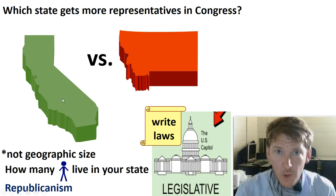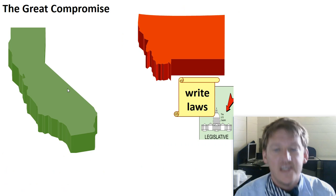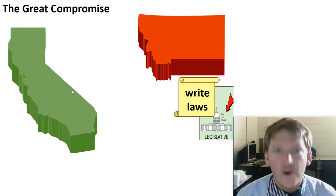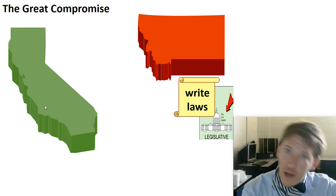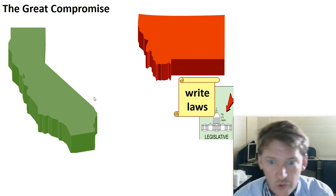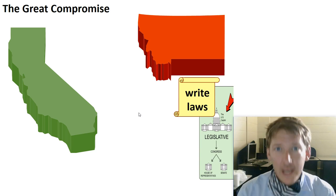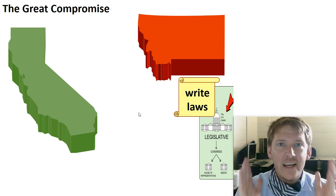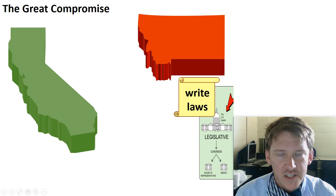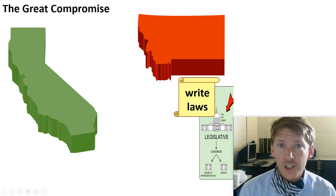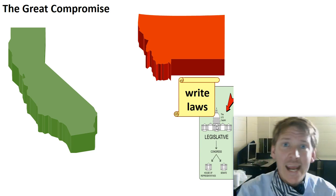We've got to give a little on both sides. The solution in the Great Compromise: the Founding Fathers realized they couldn't just help the big population states. So they took Congress — the lawmaking branch — and divided it into two houses. The legislative branch became bicameral. The Articles of Confederation had just one house, but now we have two.